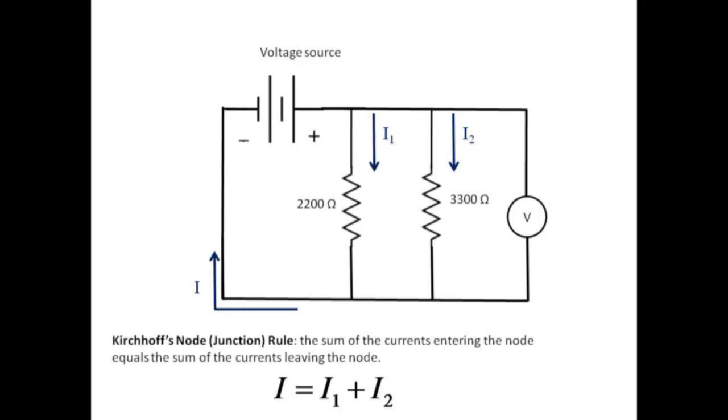According to Kirchhoff's node or junction rule, the sum of the currents entering a node equals the sum of the currents exiting the same node. Thus, I equals I1 plus I2.